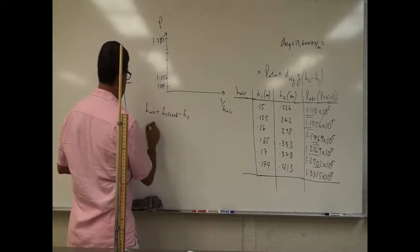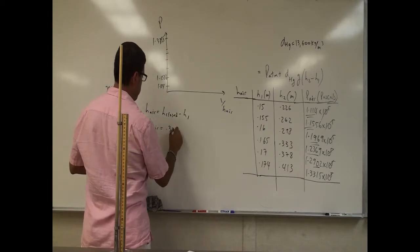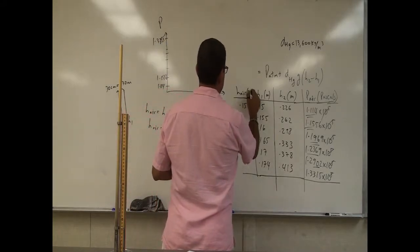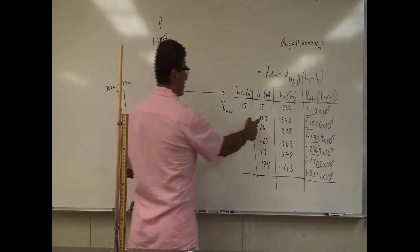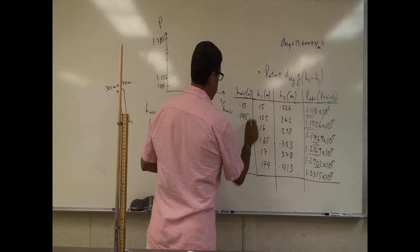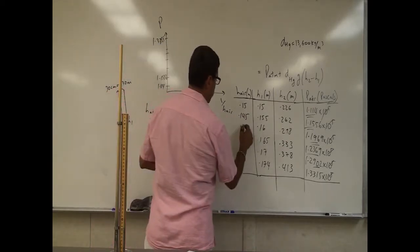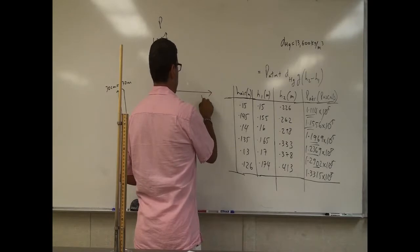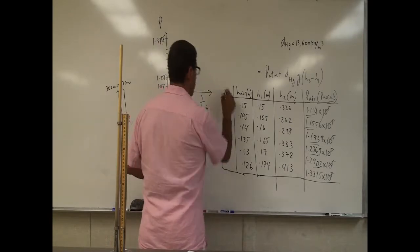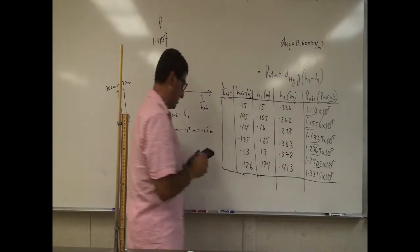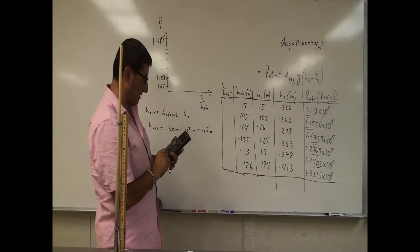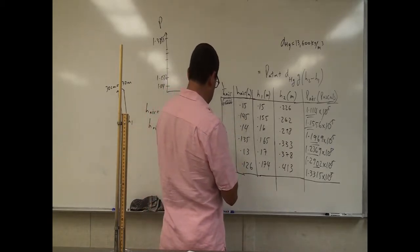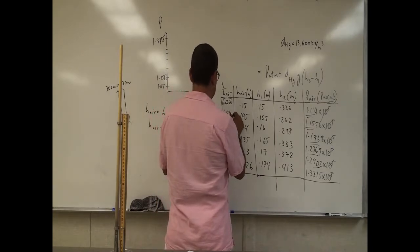The H of the air is going to be 0.30 meters minus H1. So the H of the air is going to be 0.30 minus 0.15, which equals 0.15 meters. And then 0.30 minus 0.155, so that's going to be 0.145. And then 0.3 minus 0.16 is going to be 0.14. Then I'll just do 1 over H air — that's the reciprocal. So 1 divided by 0.15 gives you 6.6666 repeating. 1 divided by 0.145 will be 6.89655.